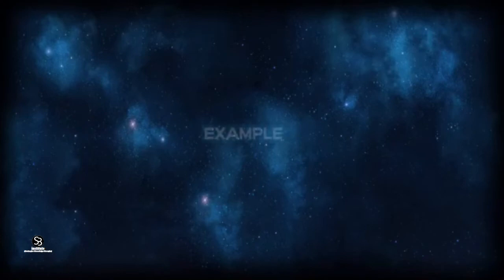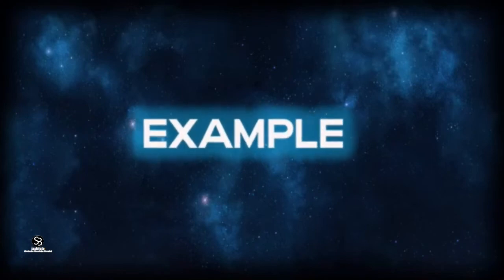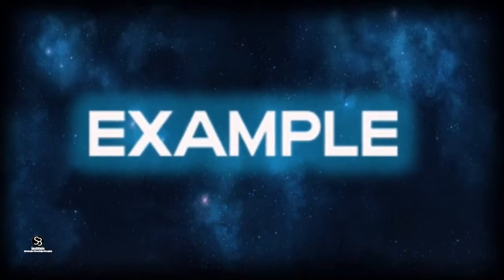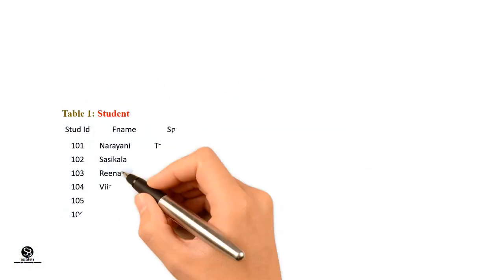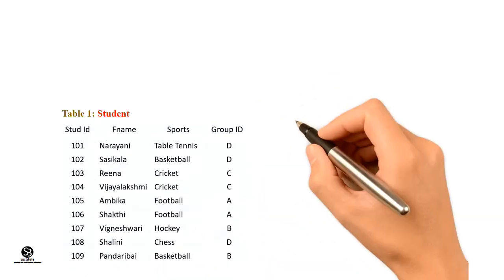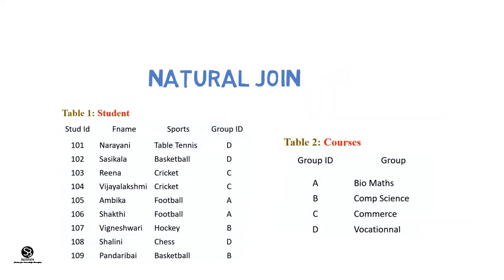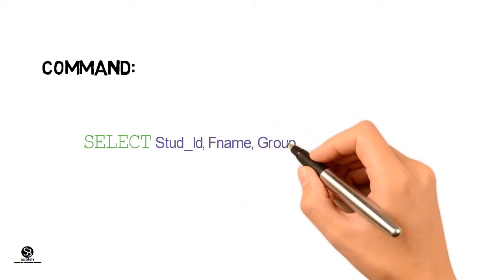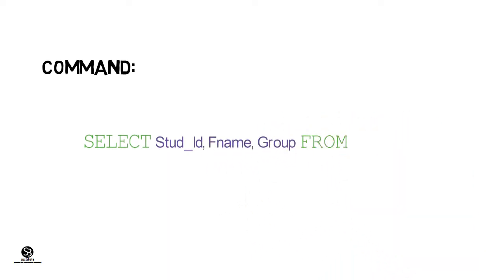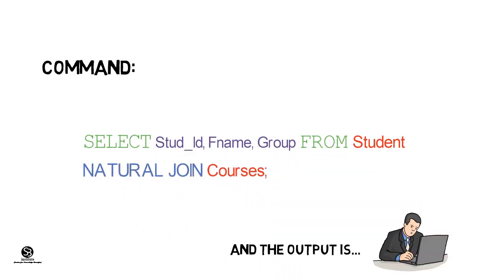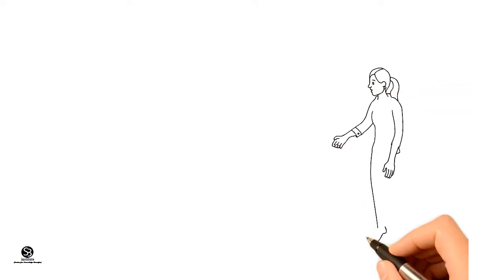There are two tables: Students and Courses. The students need a report which mentions the group for each student, which is in the course table. This can be implemented in SQL using natural join: SELECT StudentID, FName, Group FROM Student NATURAL JOIN Courses. The output will consist of student name and their respective group.